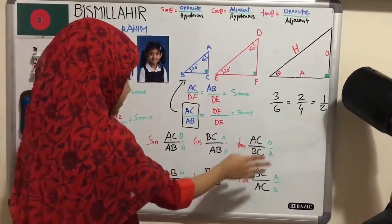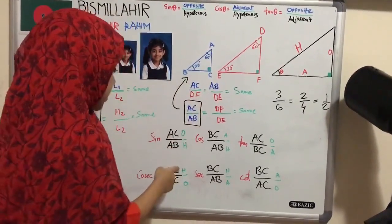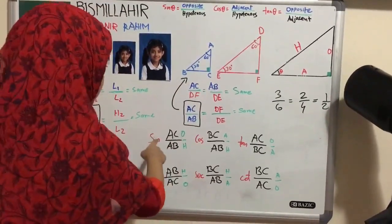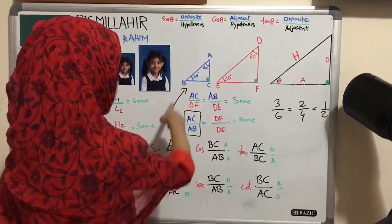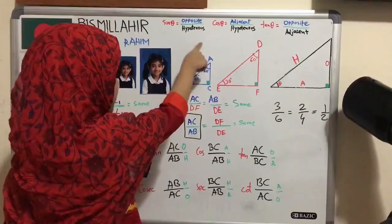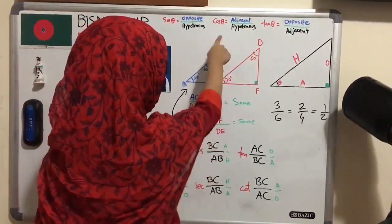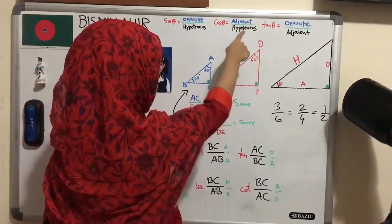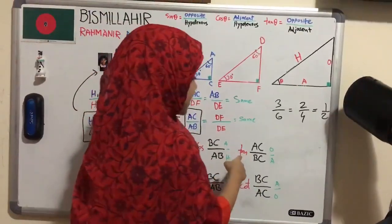Like we said, sine theta equals to opposite by hypotenuse here. And cos theta equals to adjacent by hypotenuse. And we also said that tan theta equals to opposite by adjacent.